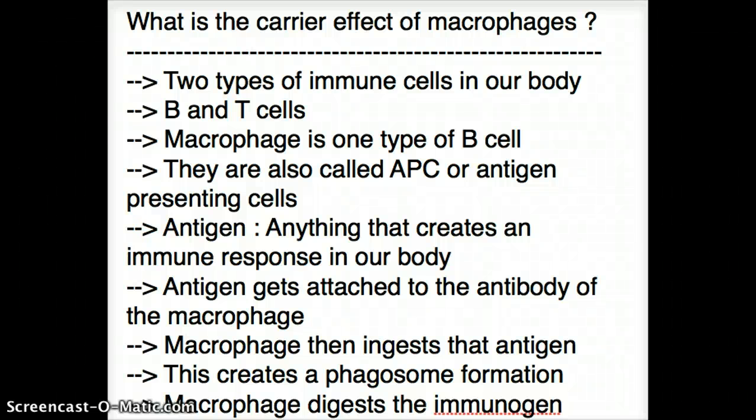This video talks about the carrier effect of macrophage. There are two types of immune cells in our body: B cells and T cells. Macrophage is one type of B cell. It is also called an antigen-presenting cell, or APC.